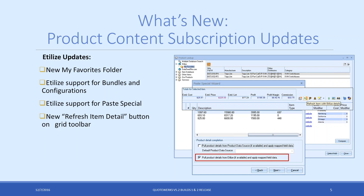Support for PaceSpecial is a great feature if any of you retrieve items from vendors. Maybe Ingram Micro sends you a quote and instead of you building it, they build it for you, and you import it into QuoteWorks using the PaceSpecial. You can now get the Etilize content from those vendors when using the PaceSpecial feature. Also, there's a new Refresh Item Detail button on the grid toolbar — a new icon that will get you the product content for a specific item without needing to open the full Etilize panel window.